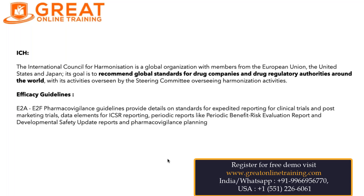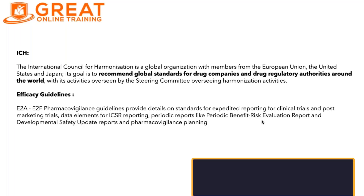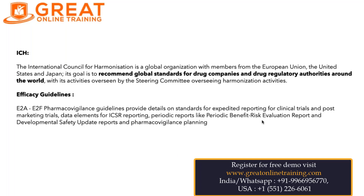ICH provides guidelines that all countries have to follow. We have the ICH efficacy guidelines from E2A to E2F. These guidelines include details on standards for expedited reporting for clinical trials and post-marketing trials, data elements for case reporting, and periodic report guidelines like the PSUR (Periodic Benefit-Risk Evaluation Report), the DSUR (Developmental Safety Update Report), and also guidelines on pharmacovigilance planning.